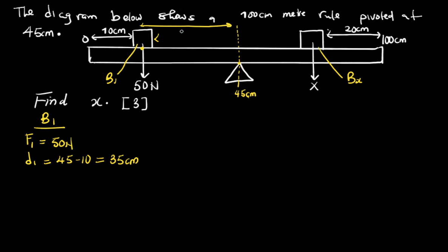For the box BX, the force F2 is just X. And the D2, which is distance 2, is the distance from where it is to the pivot. Now they are saying from 100 to here is 20. The distance between that one is 20.